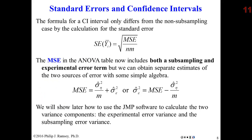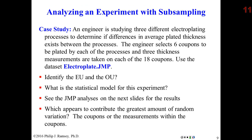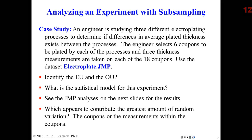We can calculate the standard error for the treatment mean in the same manner, but we have to adjust the denominator because we now have a set of M measurements for each of the experimental units. We're going to discuss a case study involving the analysis of an experiment with subsampling and replication, which will also show why we're often interested in measuring subsampling variation or lack of homogeneity in an experimental unit.